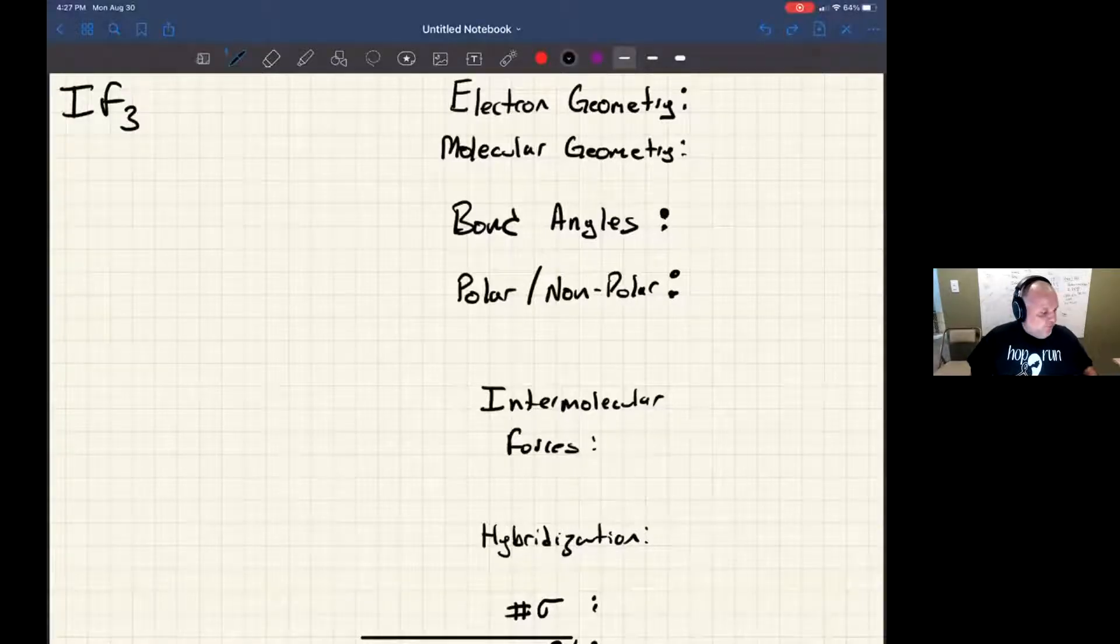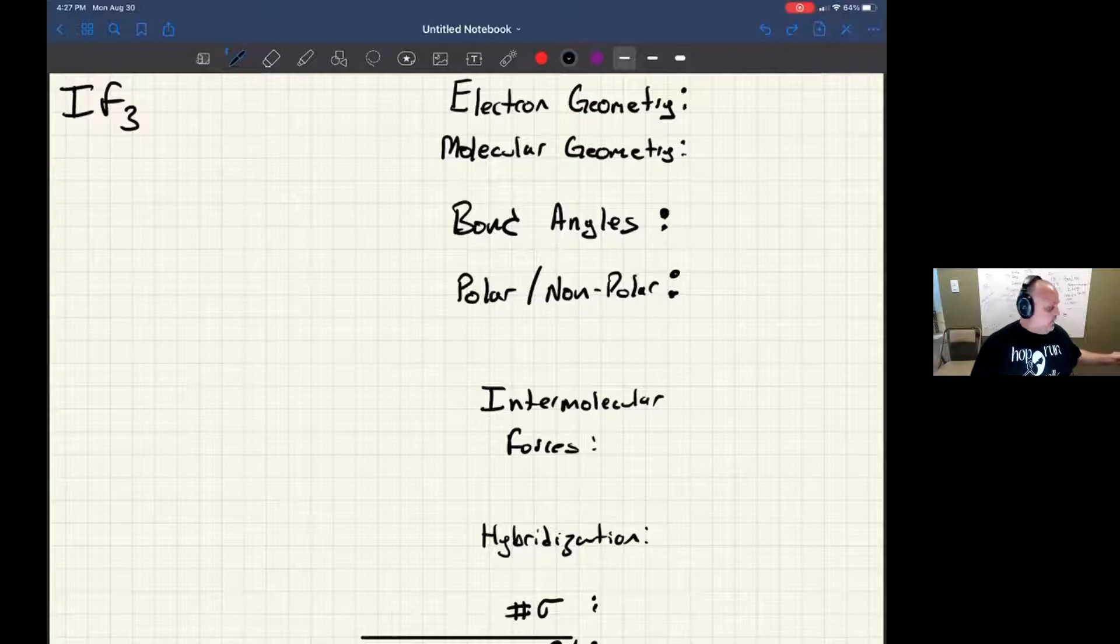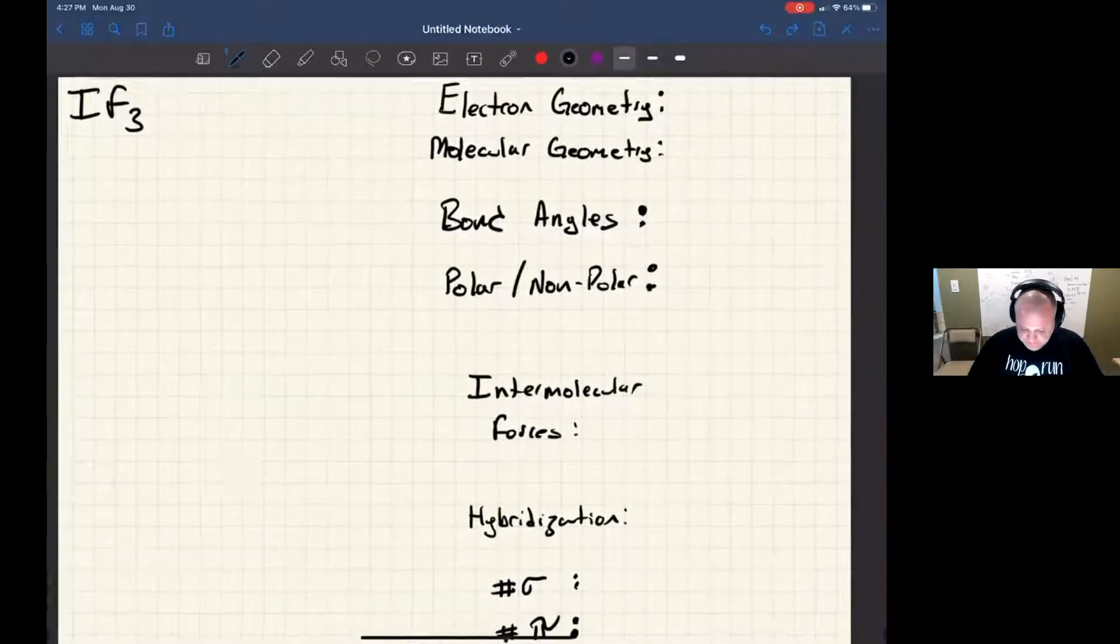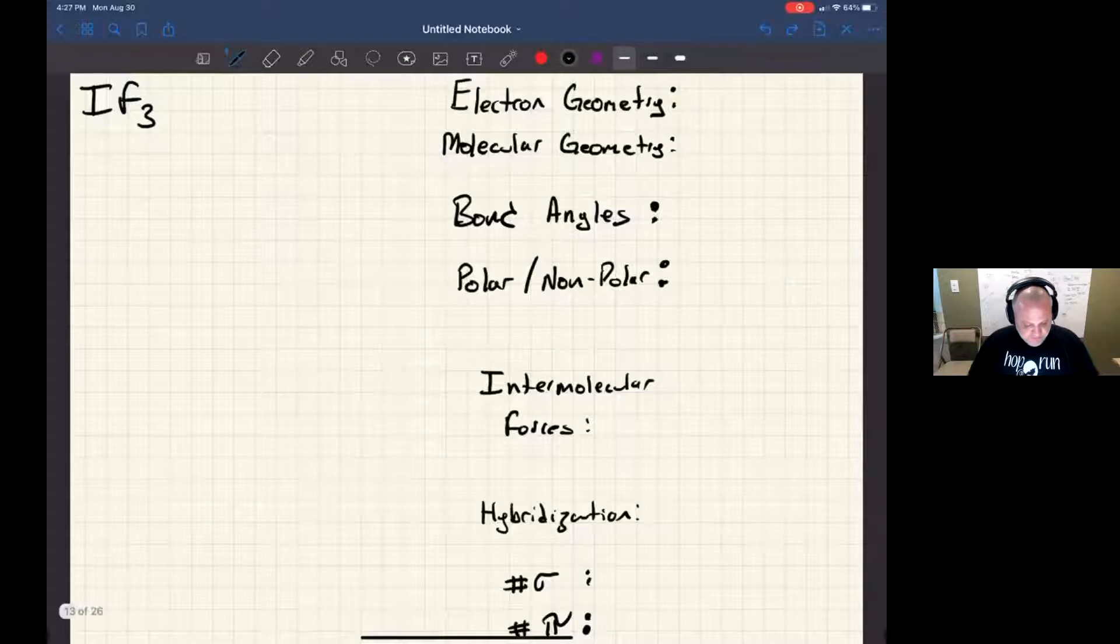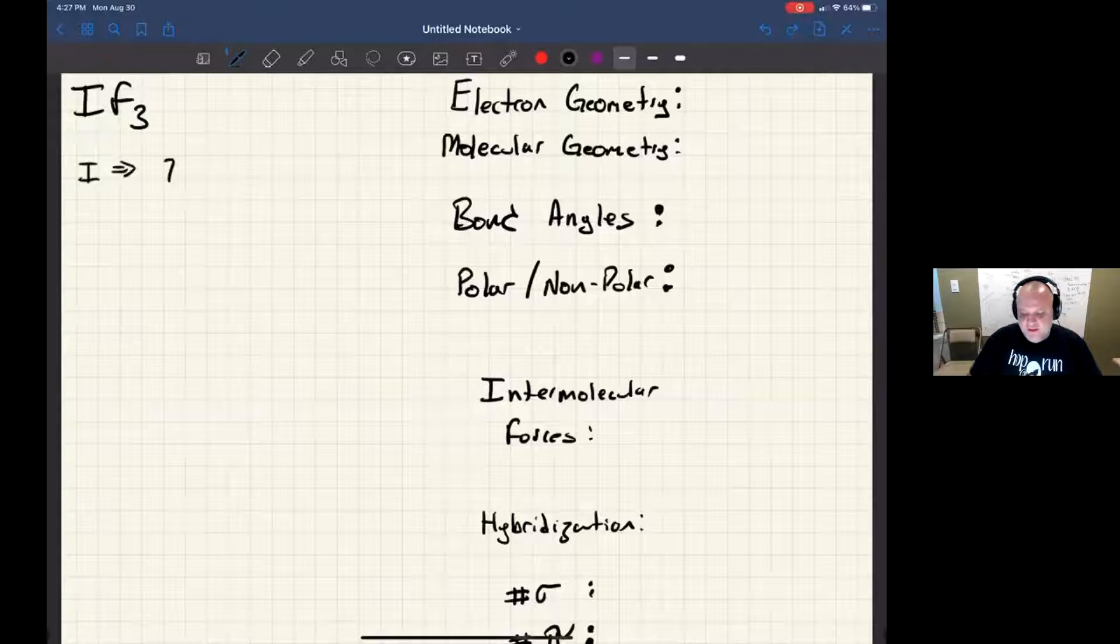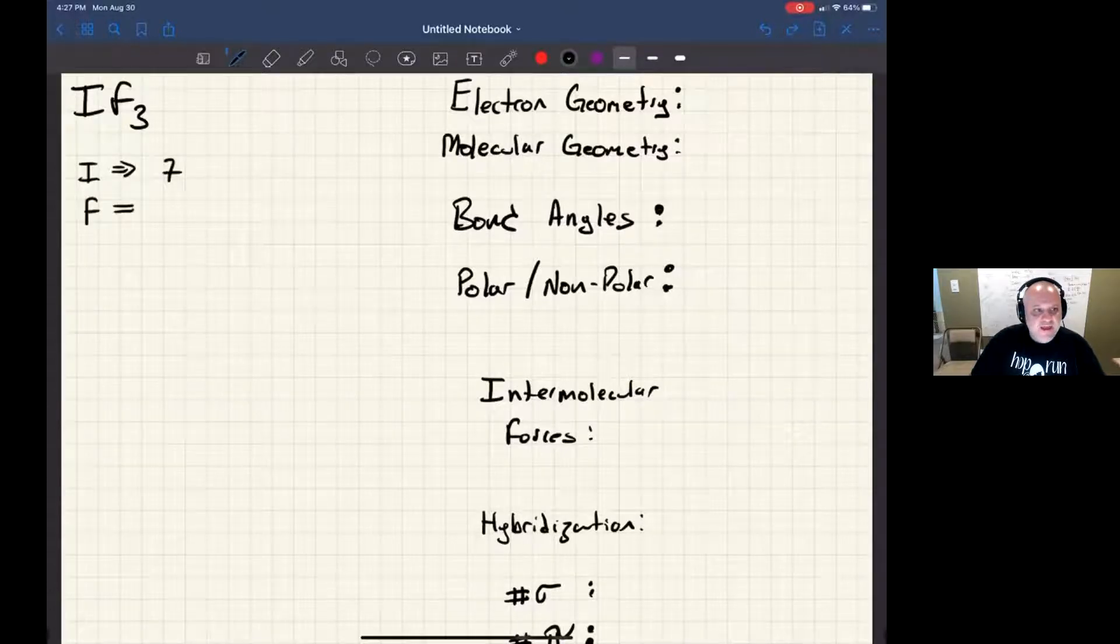Okay, this next one is for IF3. We need to draw the Lewis structure and determine all these properties. That includes sigma and pi bonds. If I was going to start off with IF3, the first thing I would do would be to count up my valence electrons. I get seven from iodine and fluorine brings seven each, so that's 21 total. Add them together and I get 28 valence electrons.